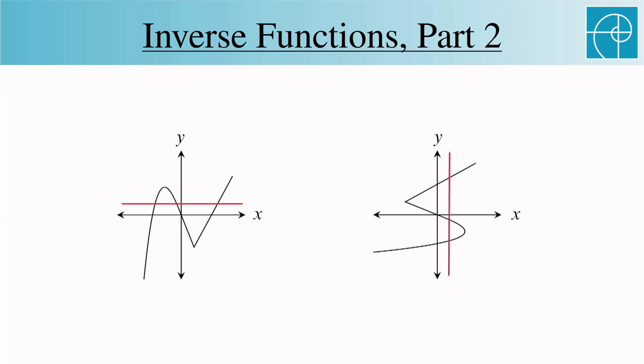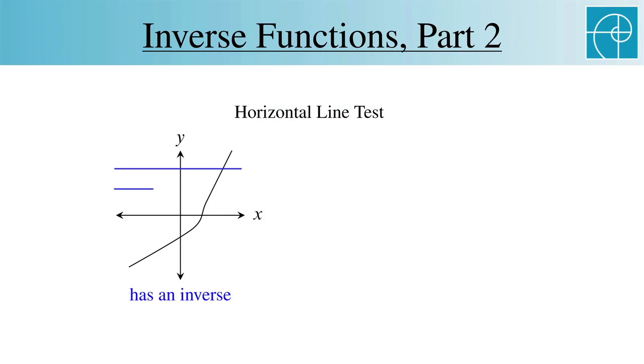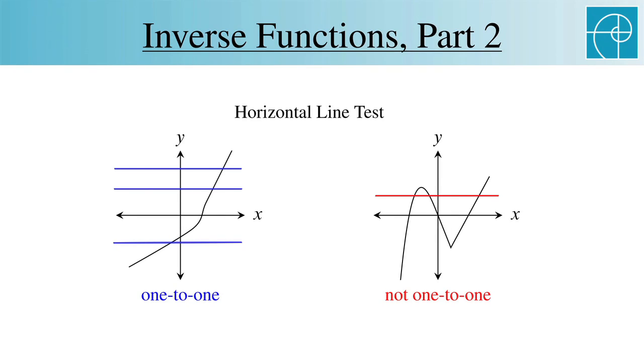So we now have the horizontal line test, which says that a function has an inverse if and only if no horizontal line intersects the graph of the function in more than one point. A term often used for functions that pass this test is one-to-one. So the one-to-one functions are precisely the ones with inverses.